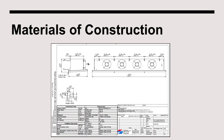When documenting the material of construction for an air cooling evaporator, the manufacturer's drawing is the key document to have on file. Often, the manufacturer will list specific materials used for the tubes, fins, and casing.